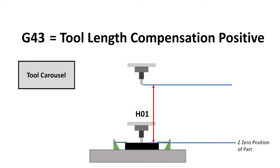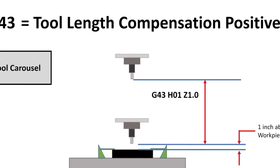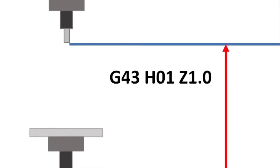That H01 number is equal to the length of the actual tool. When G43 is called up in the program, we need to include the H01 value that was registered when we touched off the tool, so that the machine knows which tool length needs to be compensated for. G43 must be used in conjunction with this height number and must have a Z location to go to when it is called up.